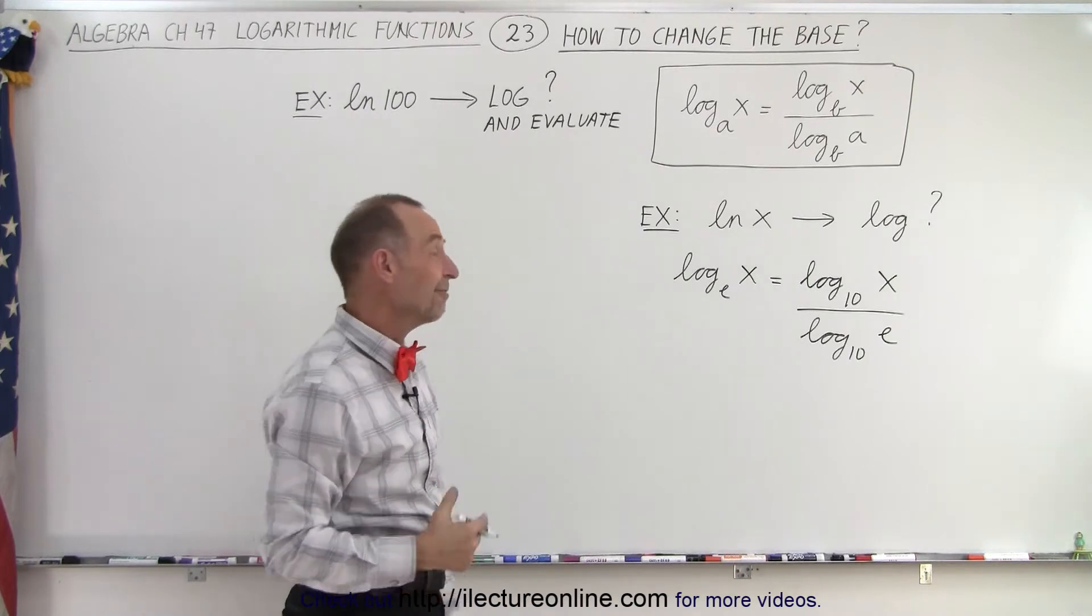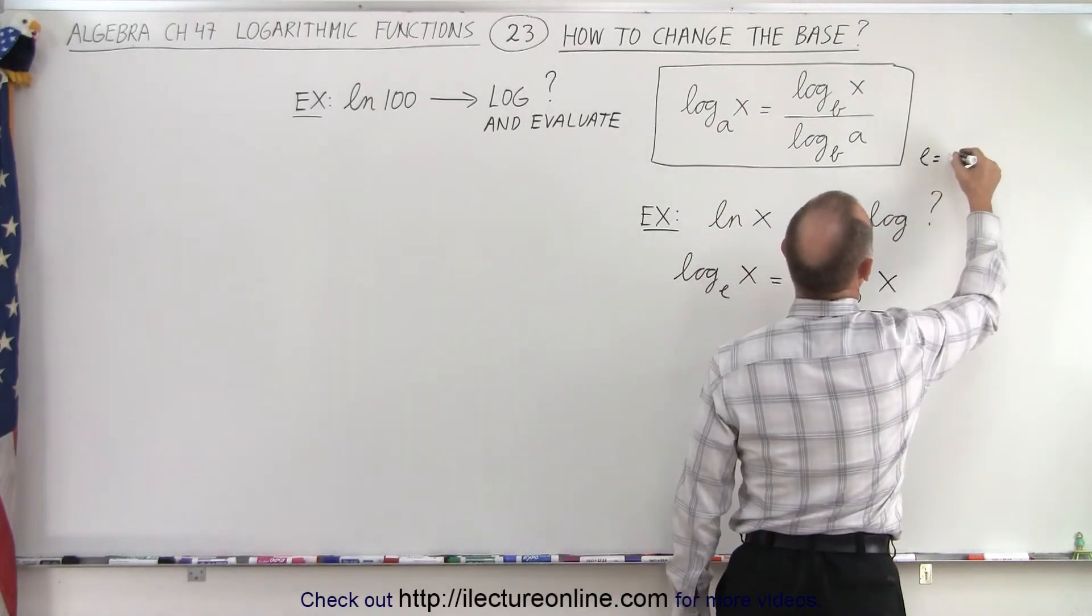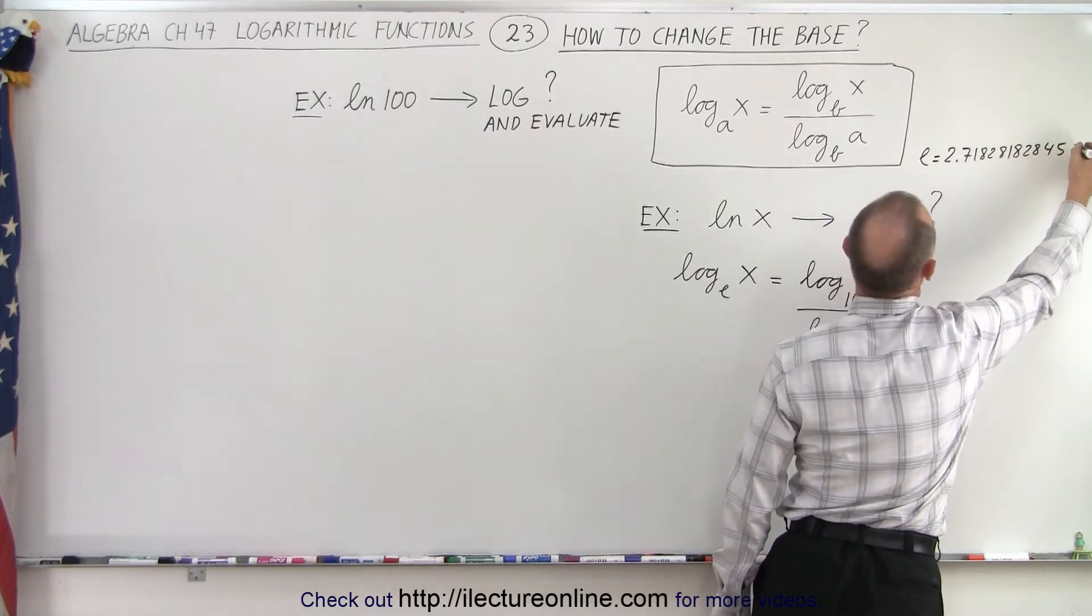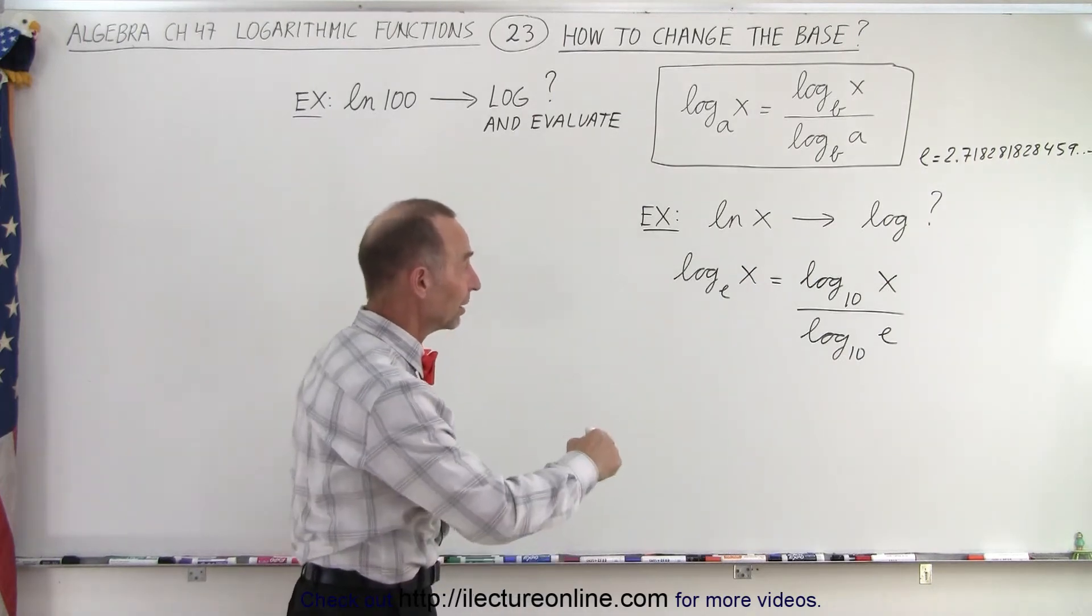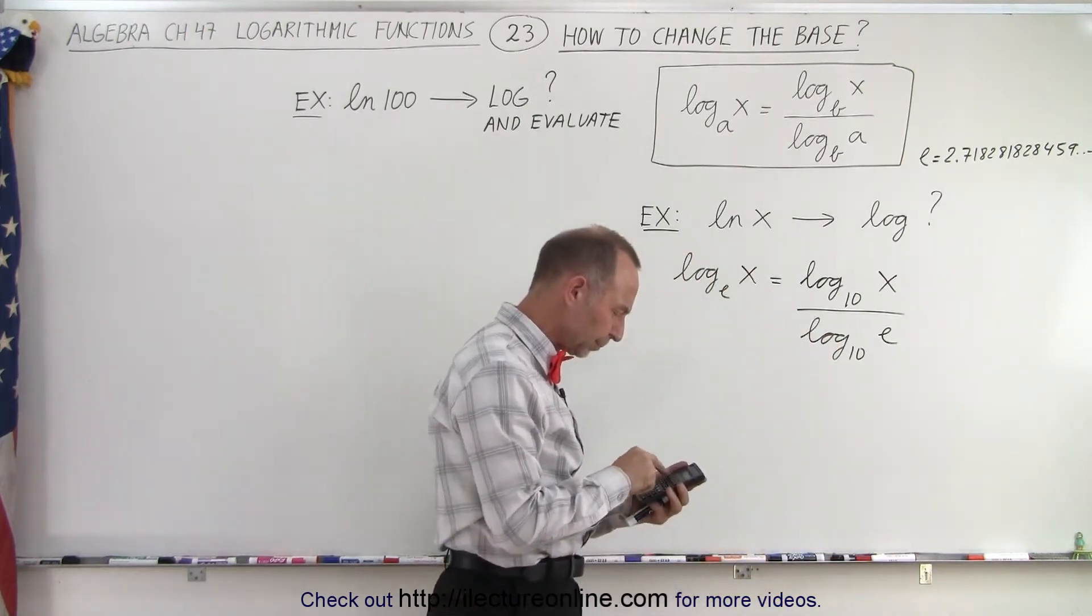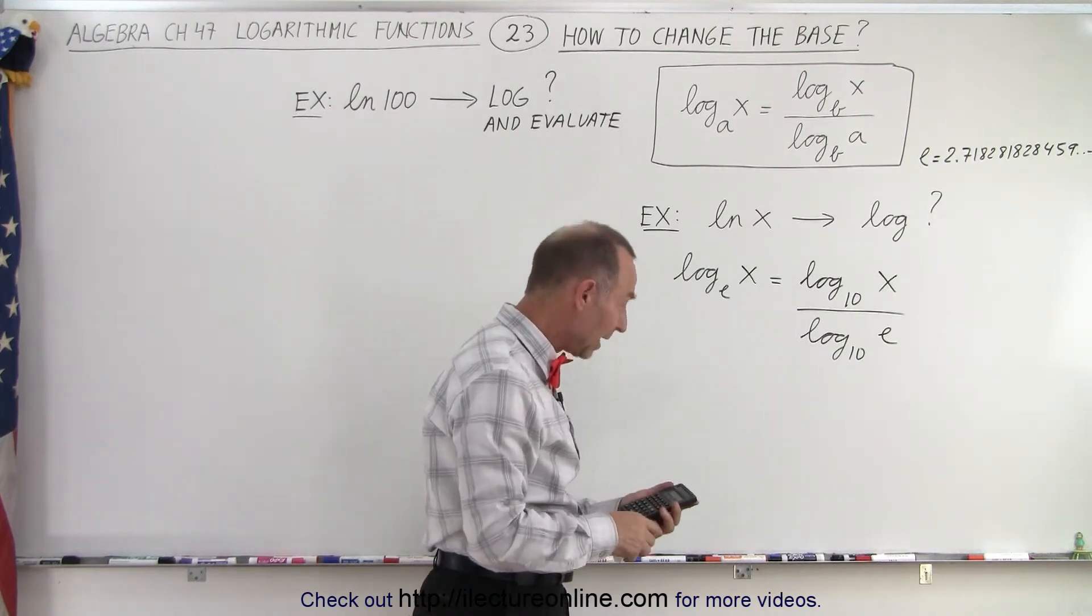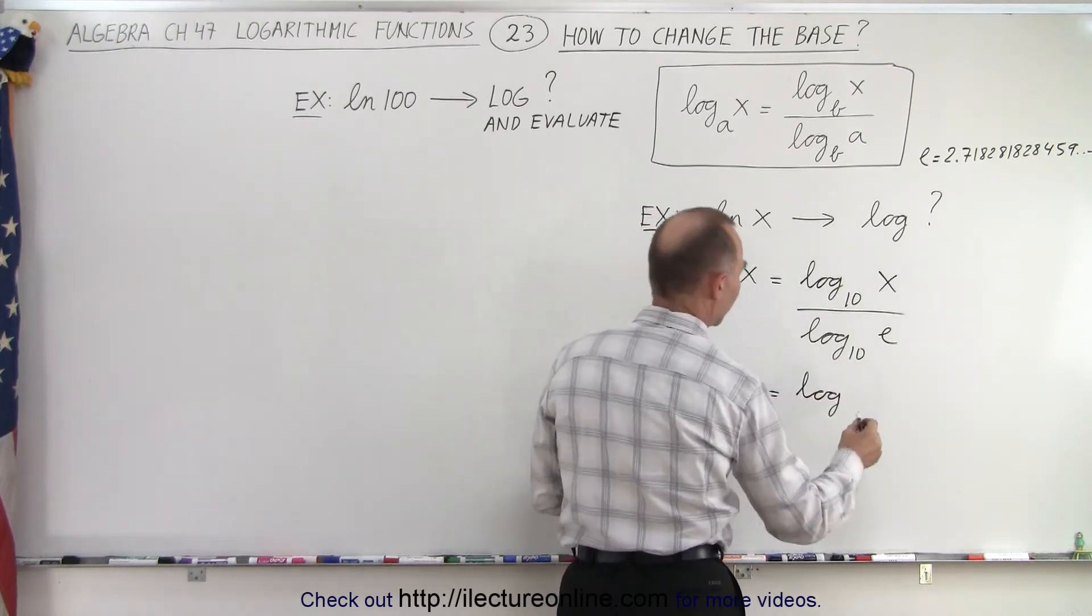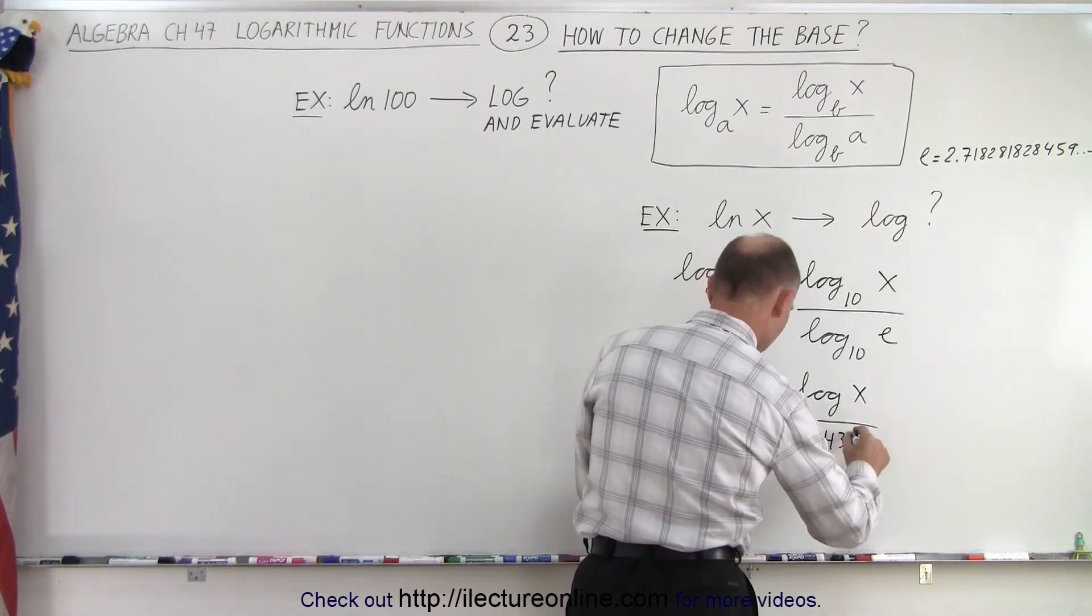And, of course, we can evaluate the log base 10 of e, because e is that natural number. Remember that e is equal to 2.718281828459, a non-repeating decimal. So, if you take that and put it in your calculator, and then you take the log of that, well, let's try that. So, there's my natural number. We take the log of that, and we get, this is equal to the log, we don't have to write base 10, because that's a common log of x, divided by 0.43429.